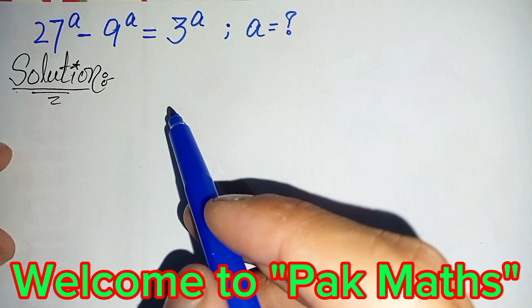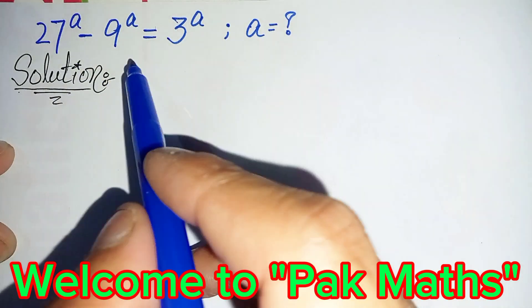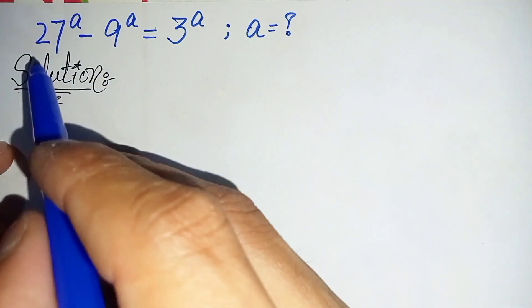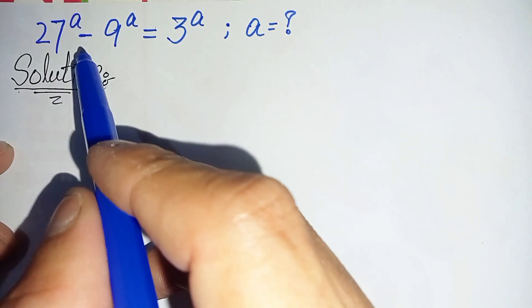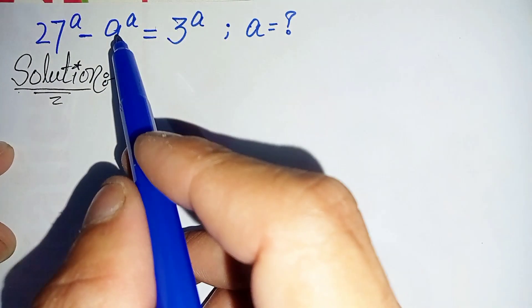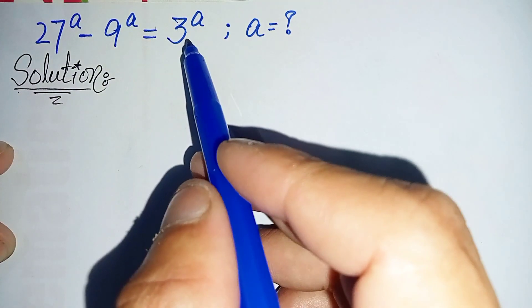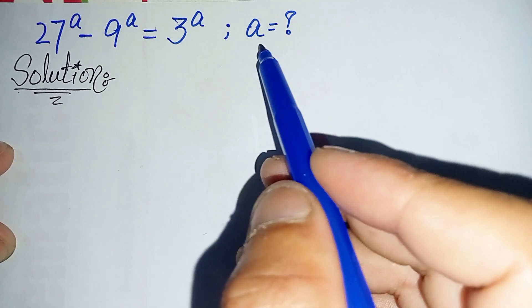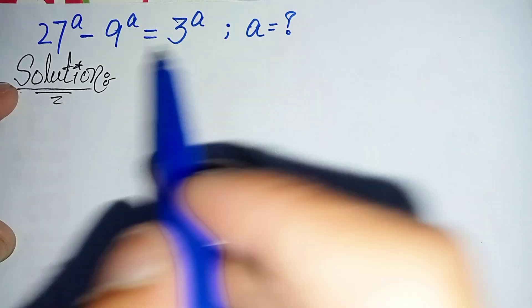Hello, you are welcome. How to solve this nice exponential equation, which is 27 raised to power a minus 9 raised to power a is equal to 3 raised to power a. So here we will try to find the value of a.